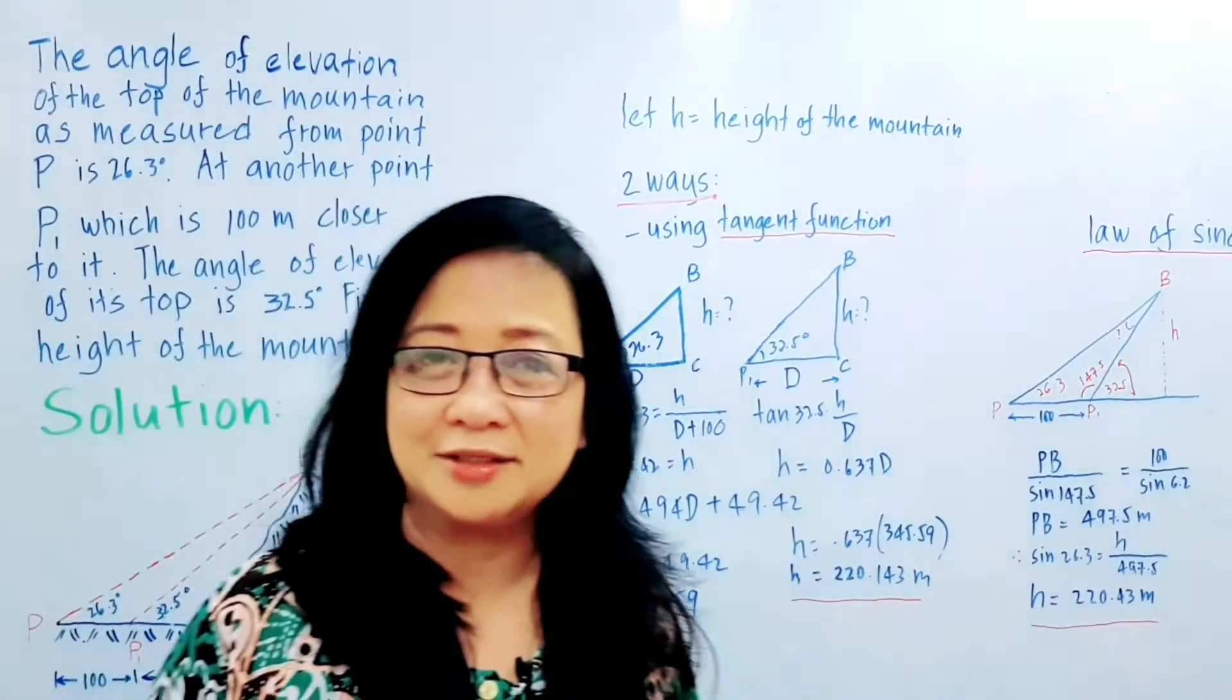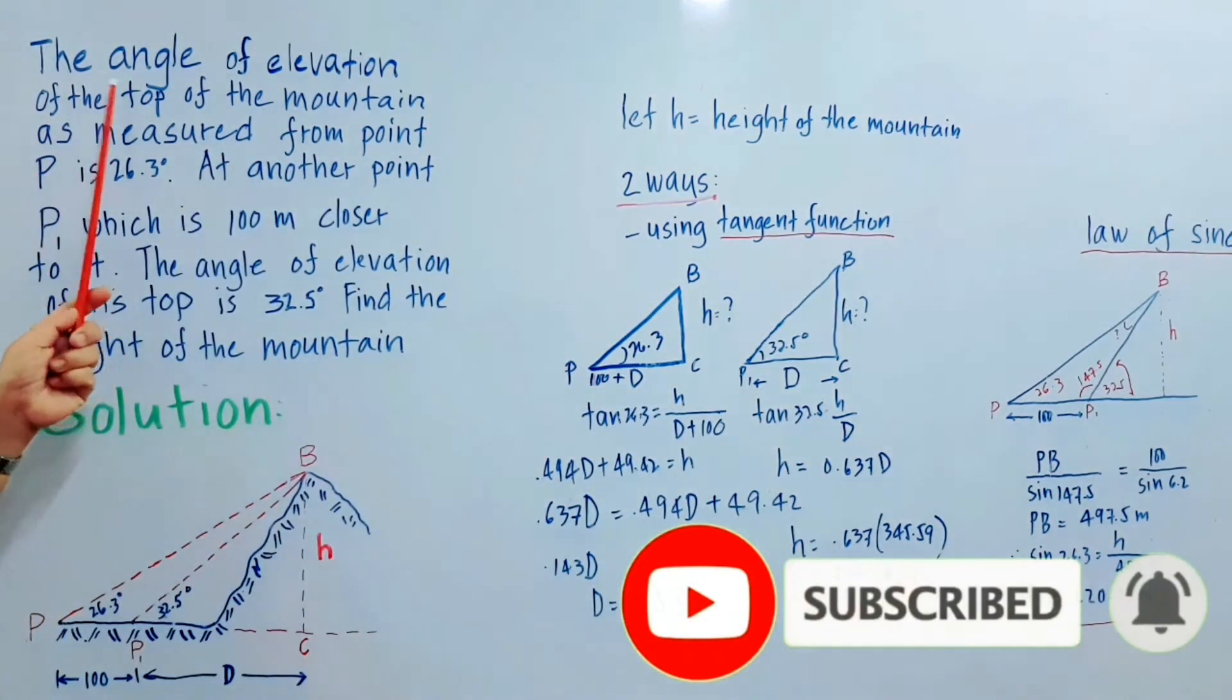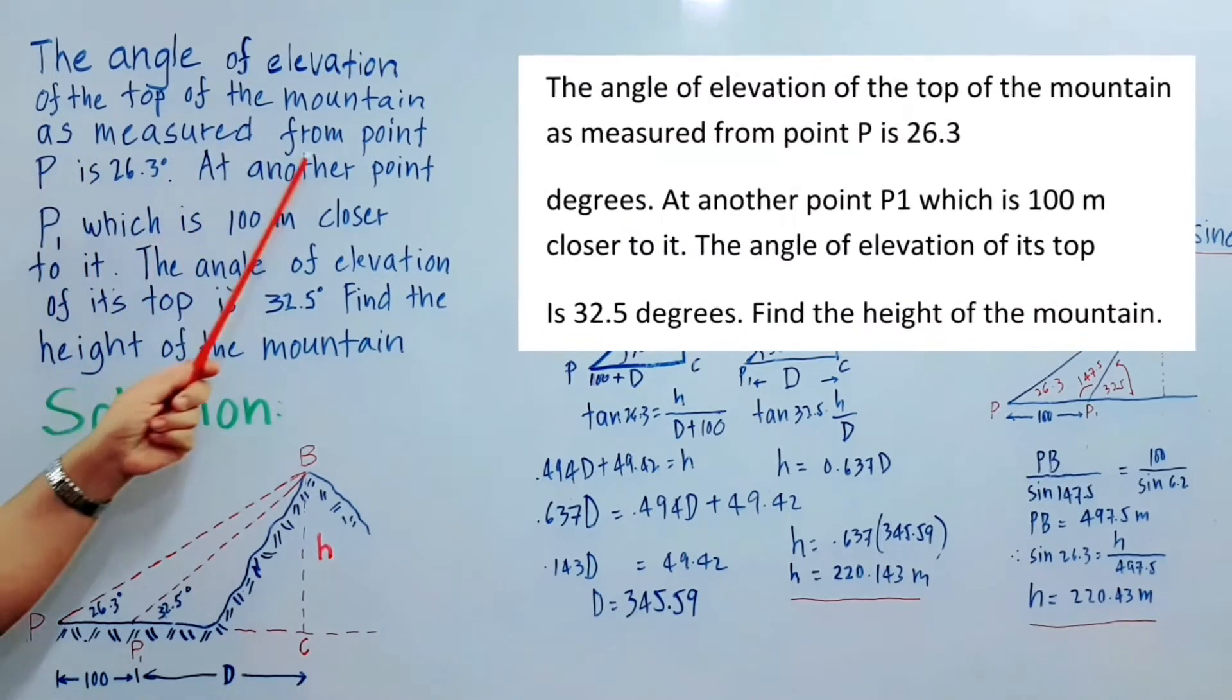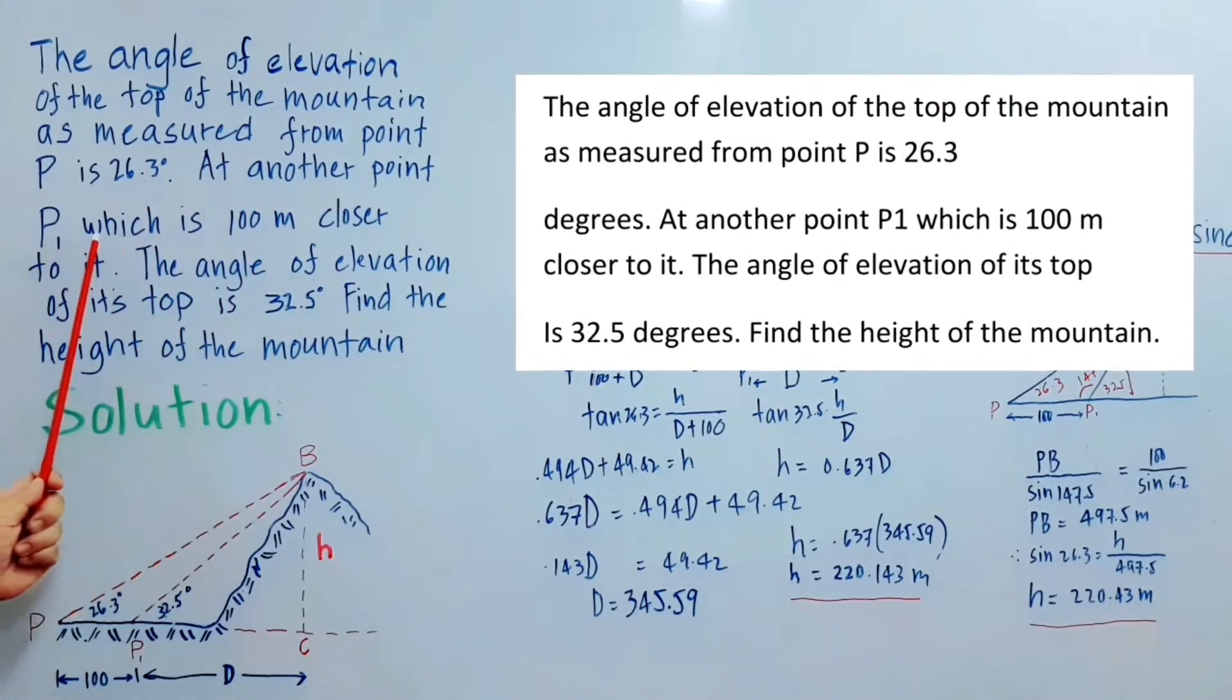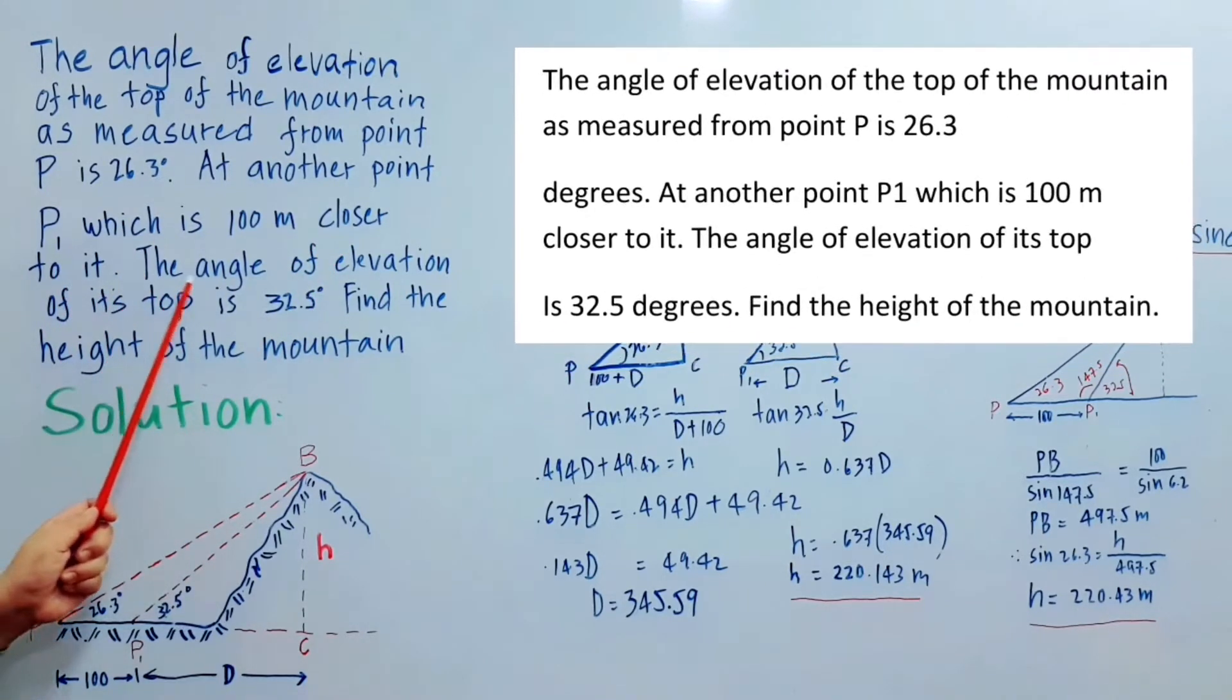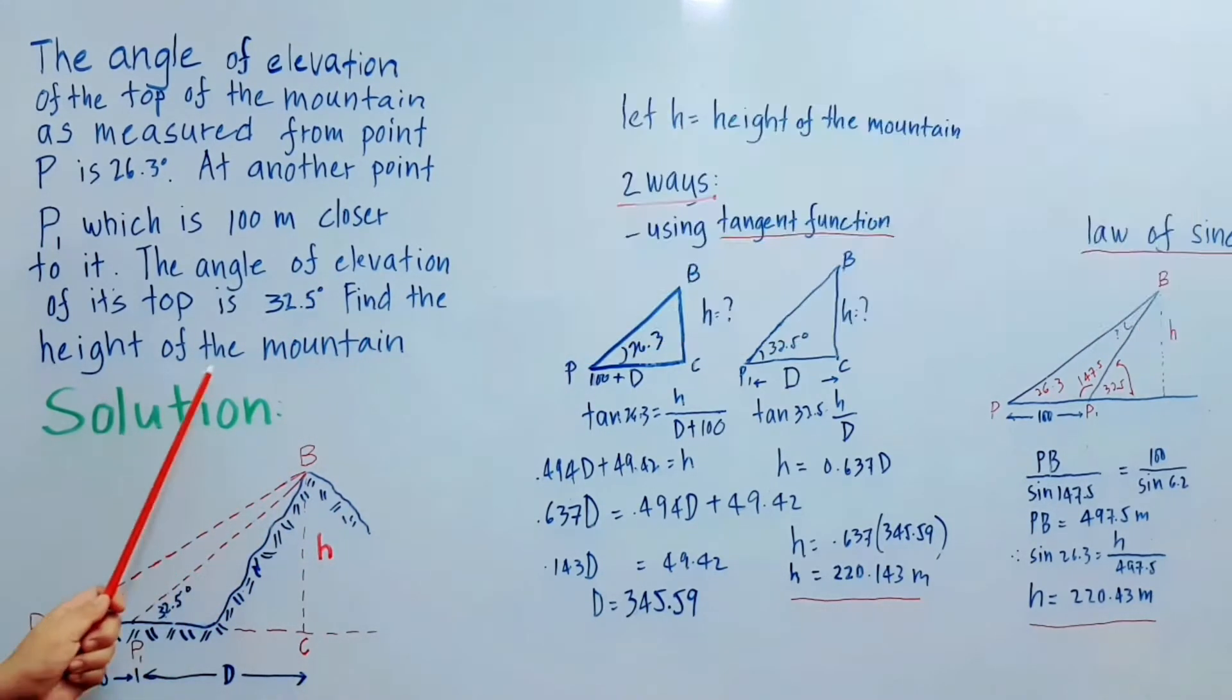Hello everyone, this is Jane again with you and we are trying to solve another math problem. The angle of elevation of the top of the mountain as measured from point P is 26.3 degrees. At another point P1 which is 100 meters closer to it, the angle of elevation of its top is 32.5 degrees. Find the height of the mountain.